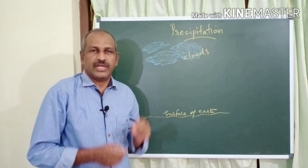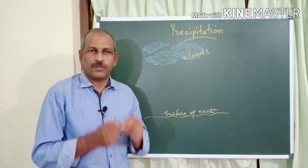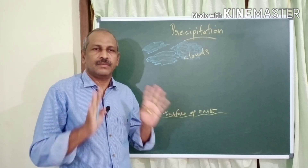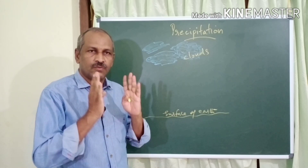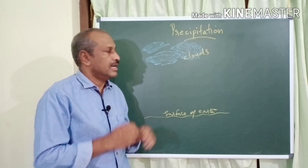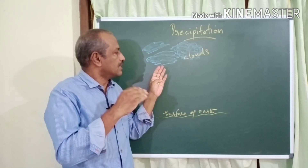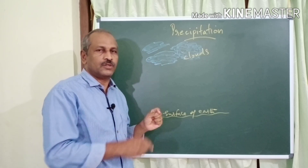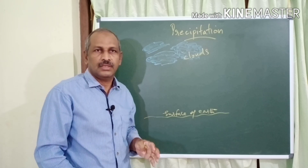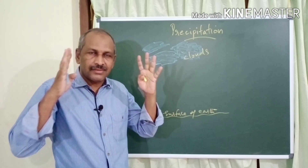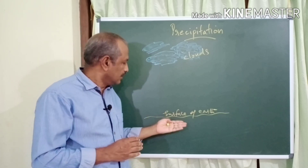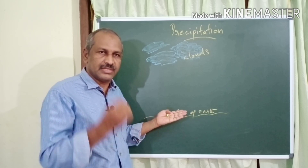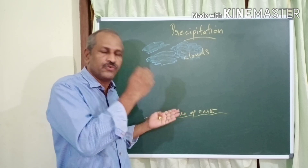Last class we had seen the formation of clouds. Clouds are nothing but condensed water droplets. As condensation continues, the size of the water droplets in the cloud grow. And the earth exerts its gravitational force on the water surface.